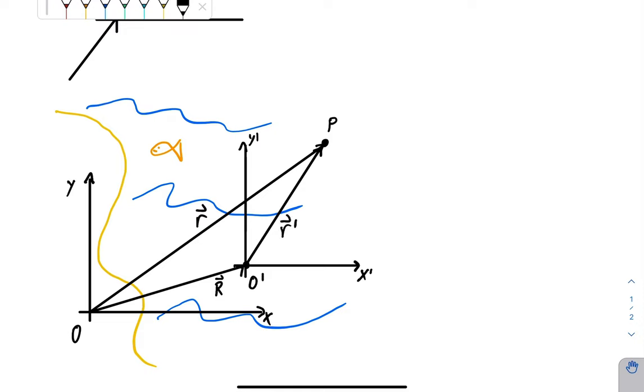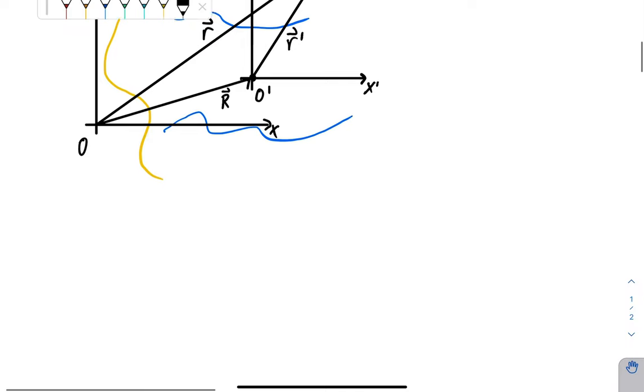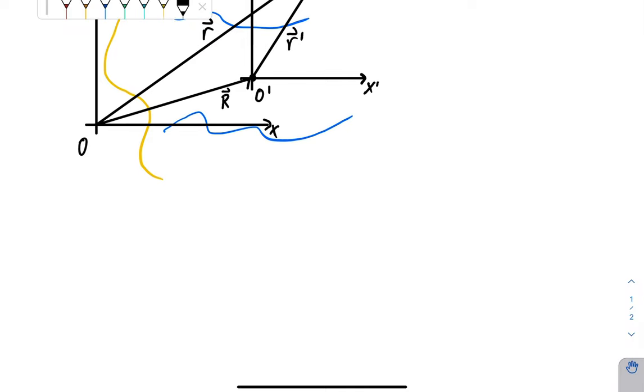Well, these vectors are going to change because everything is moving here. We're going to make the assumption, again, that all of the times are the same. So if I have a clock on the ship, and I have a clock on the speedboat, and I have a clock on the shore, then they're all going to read the same values. We're not dealing with special relativity just yet.